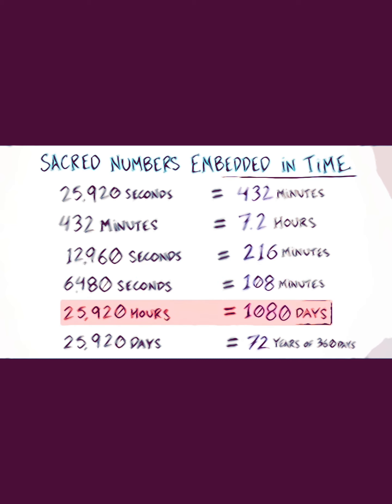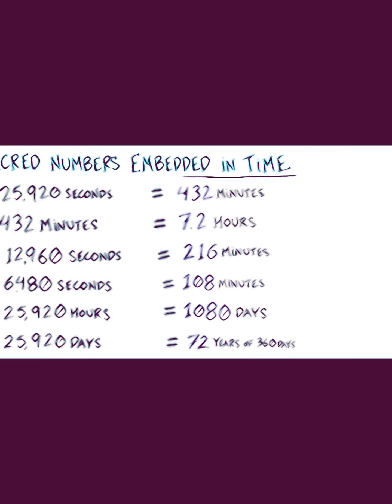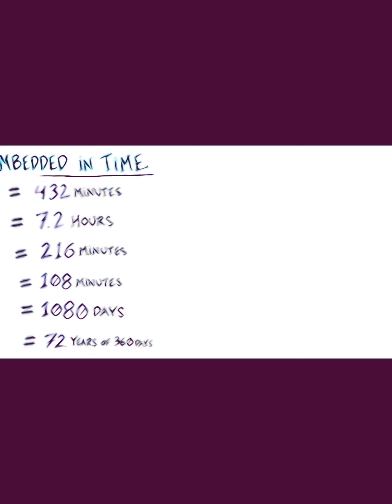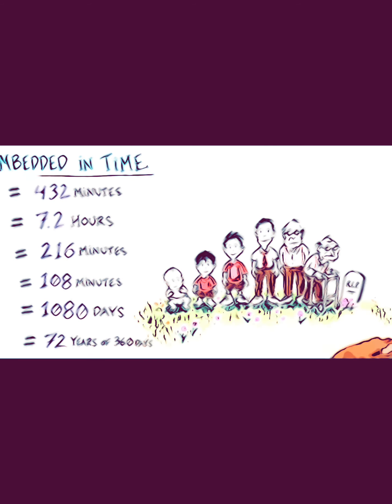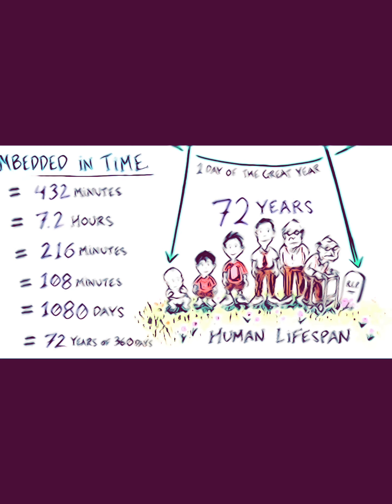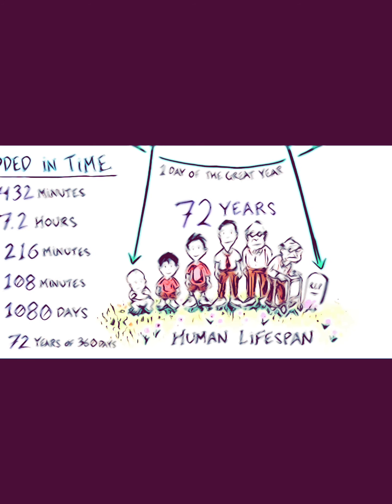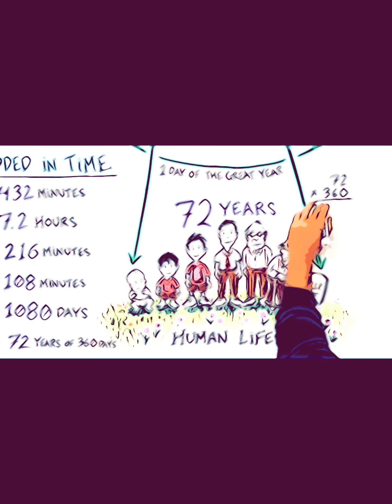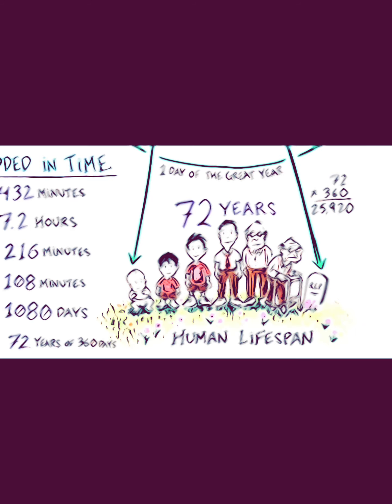25,920 hours equals 1,080 days, and 25,920 days equals 72 years in the sacred calendar. Interestingly, the average human lifespan is about 72 years, so you could think of a human lifespan as equivalent to one day of the great year—a proportional relationship between the total processional cycle of 25,920 years and one human lifetime.